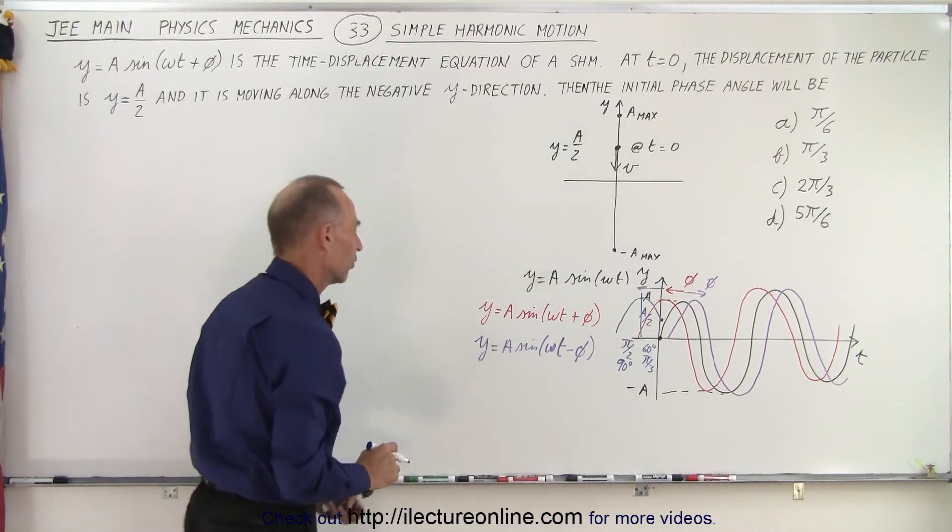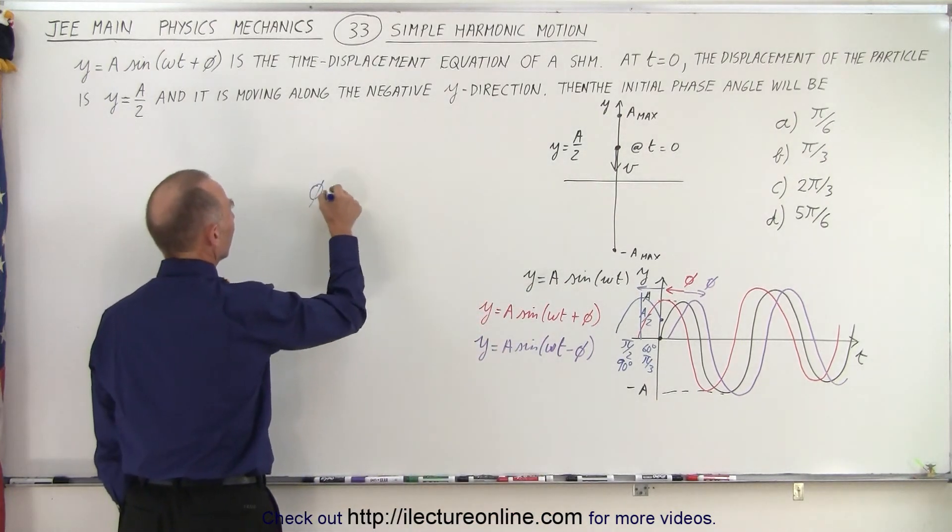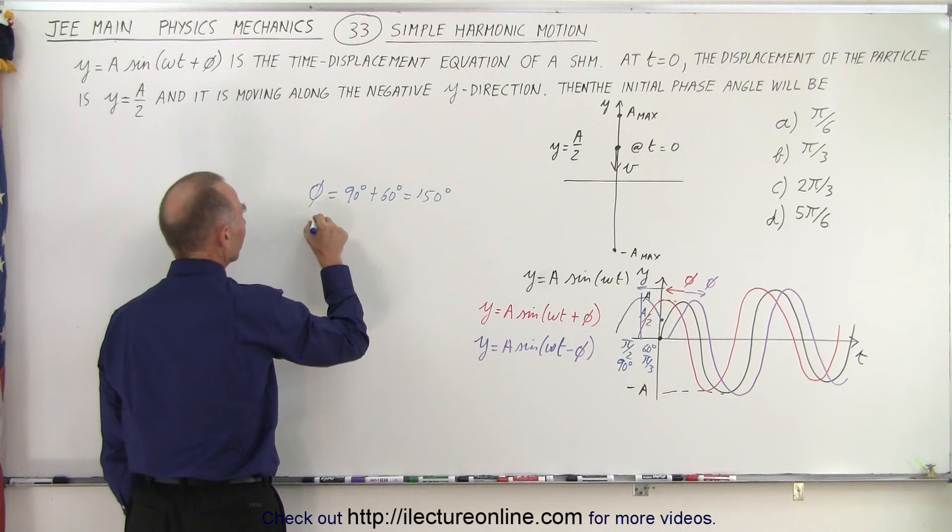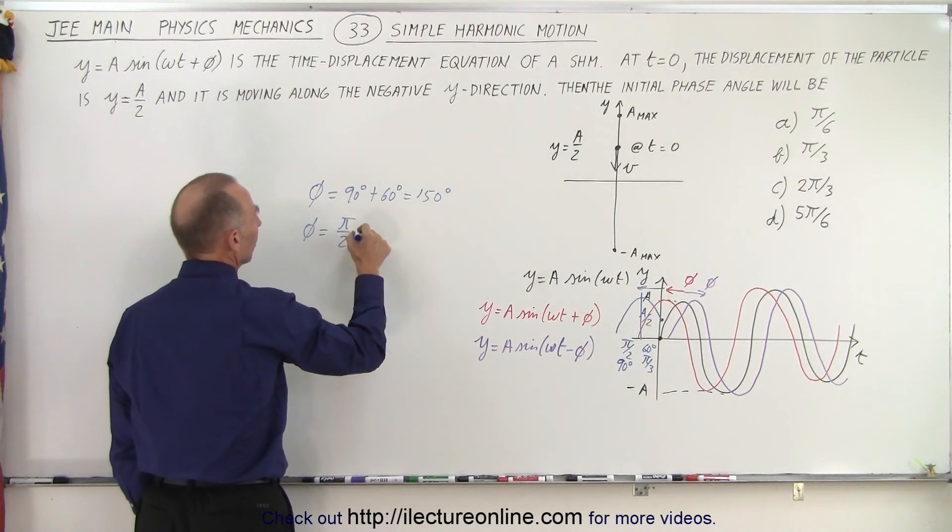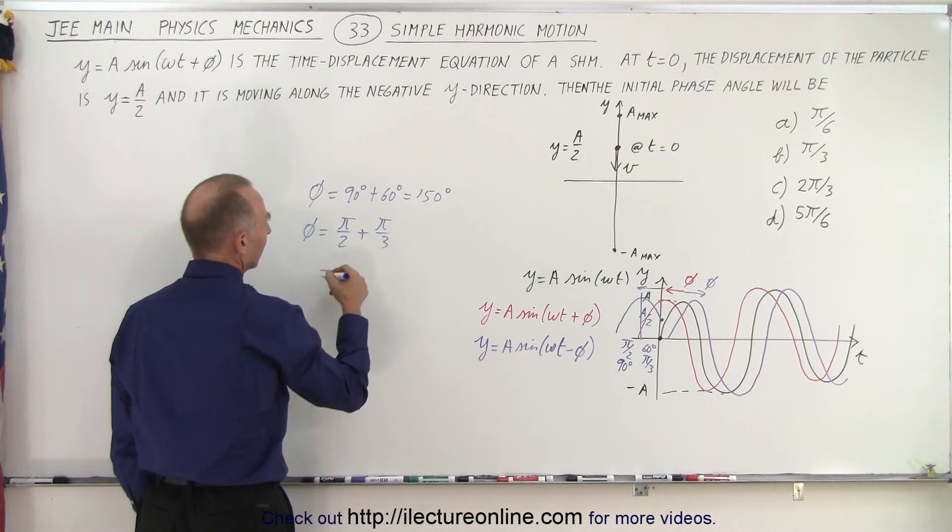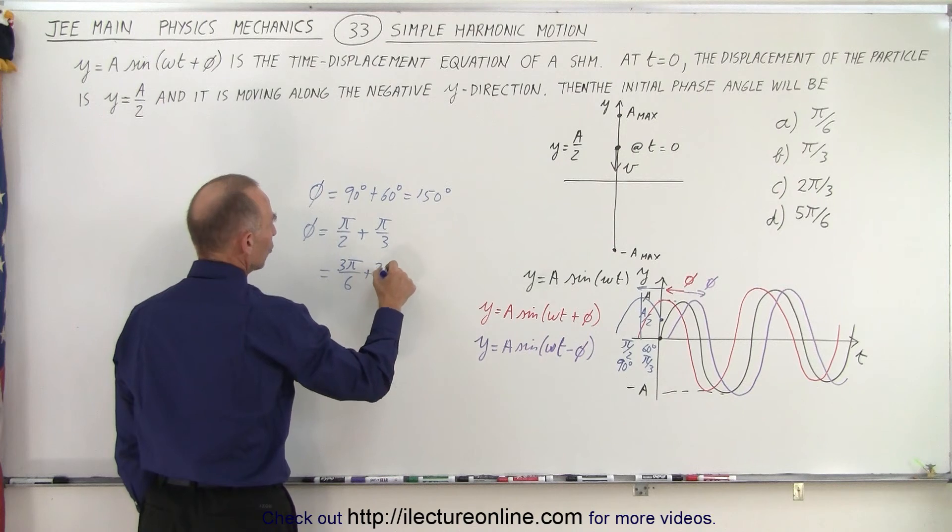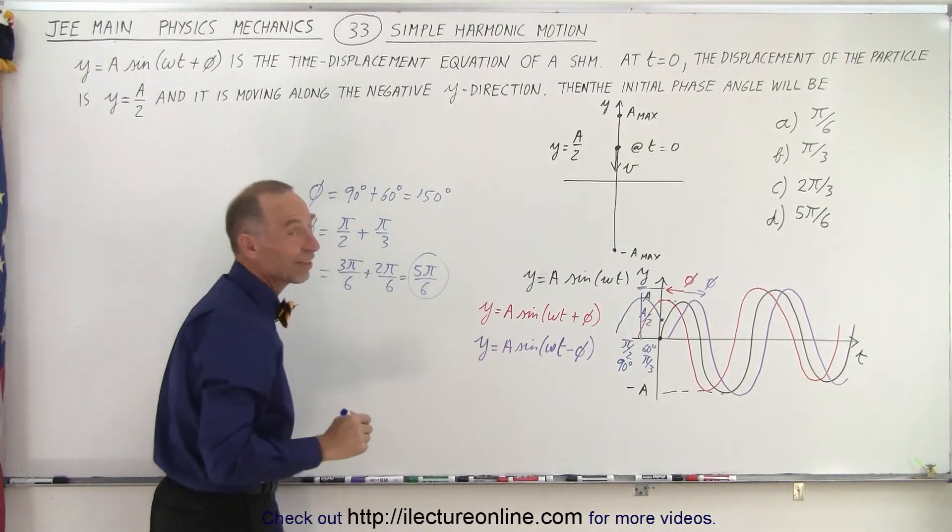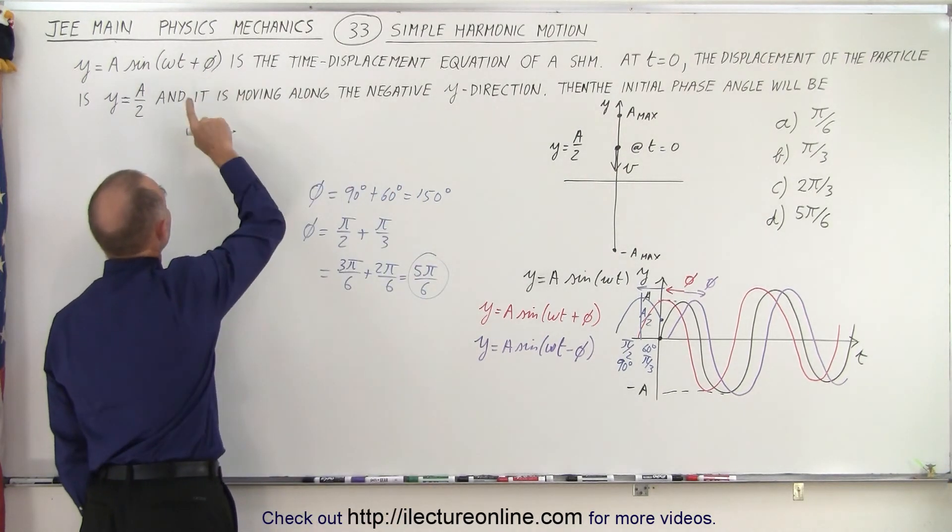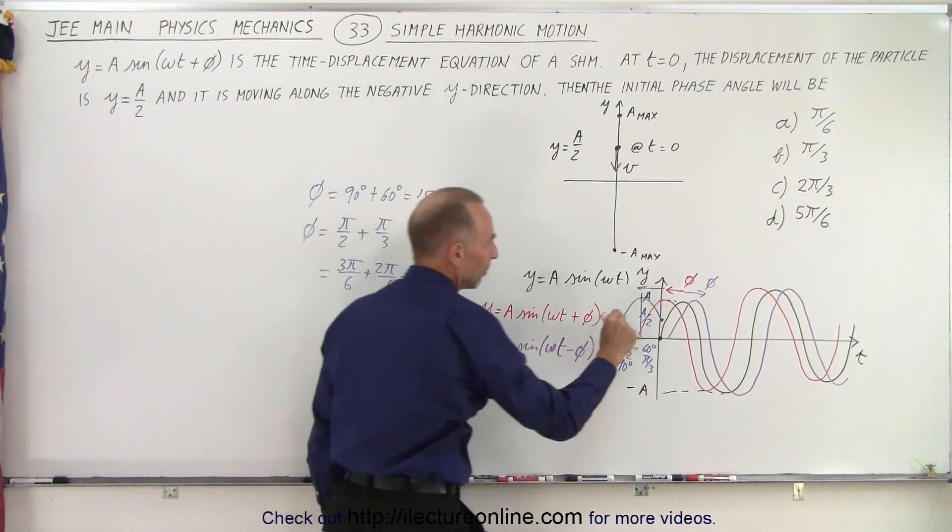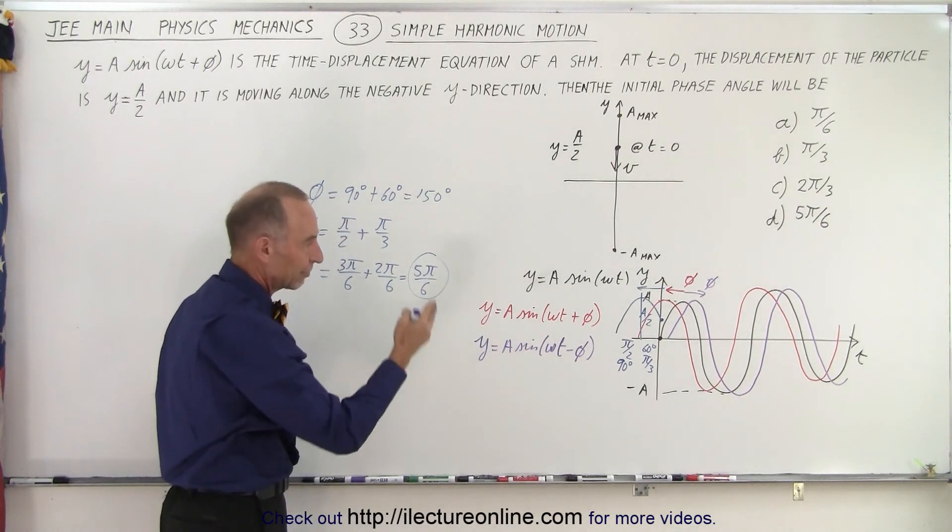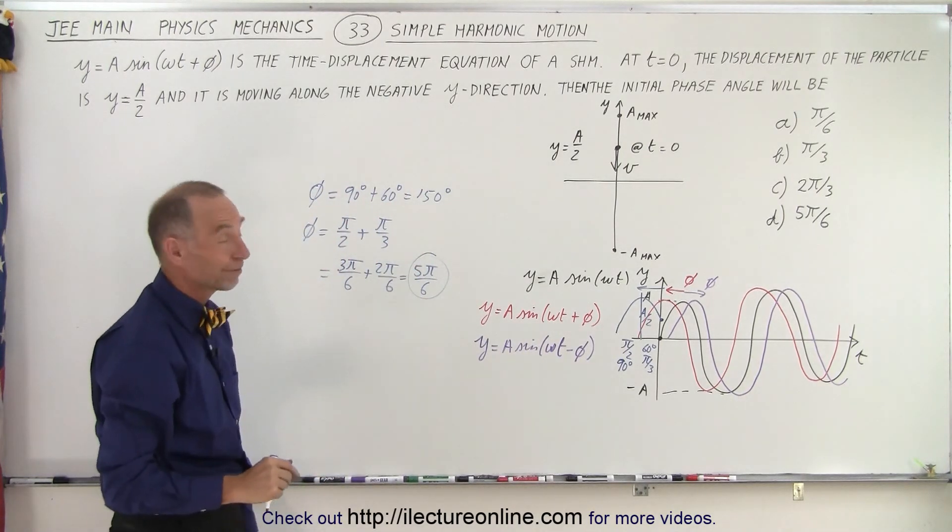So pi over two, which is 90 degrees, plus 60 degrees, which is pi over three, and if we add those two together, that will be the entire phase shift. So now we can say that the phase shift is equal to 90 degrees plus 60 degrees, which is 150 degrees. Or we can say that the phase shift is equal to pi over two plus pi over three, and the common denominator is six. That gives us three pi over six plus two pi over six, which is equal to five pi over six. And that should be the phase angle that we need to add right here in order to have the bob, or the particle, start at this position at time equals zero. It needs to have a shift to the left by five pi over six.